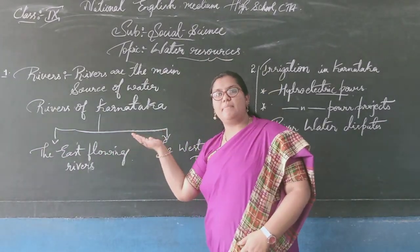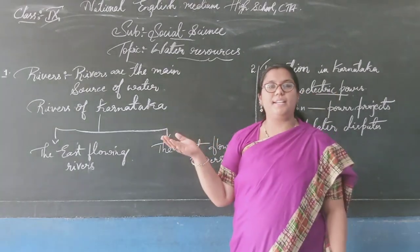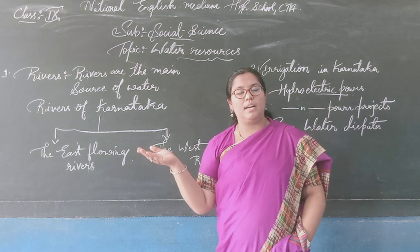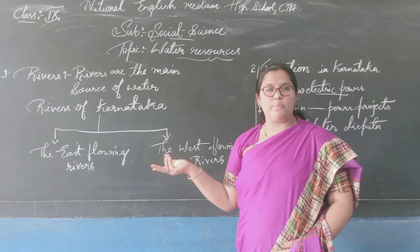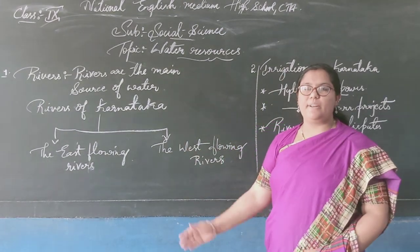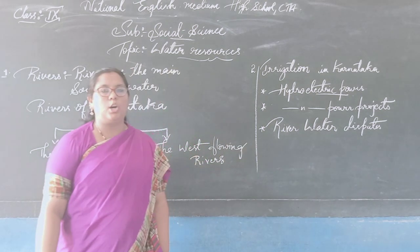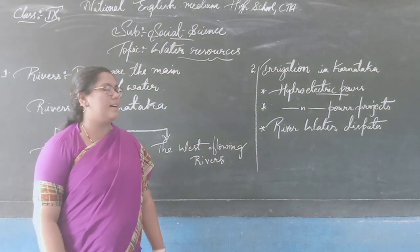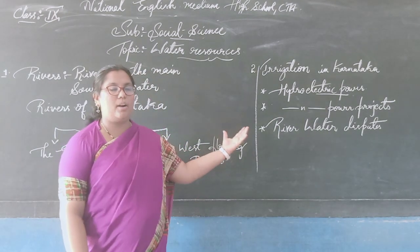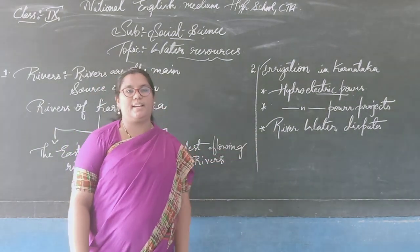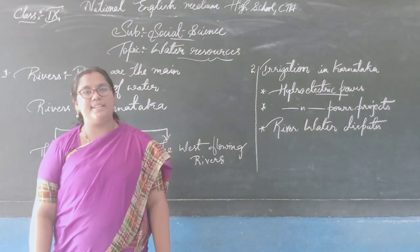The first key point is rivers — rivers are the main source of water. The rivers of Karnataka are divided into two categories: east flowing rivers and west flowing rivers. We will also look at some important topics on irrigation of Karnataka, hydroelectric power and hydroelectric power projects, and river water disputes among the states.